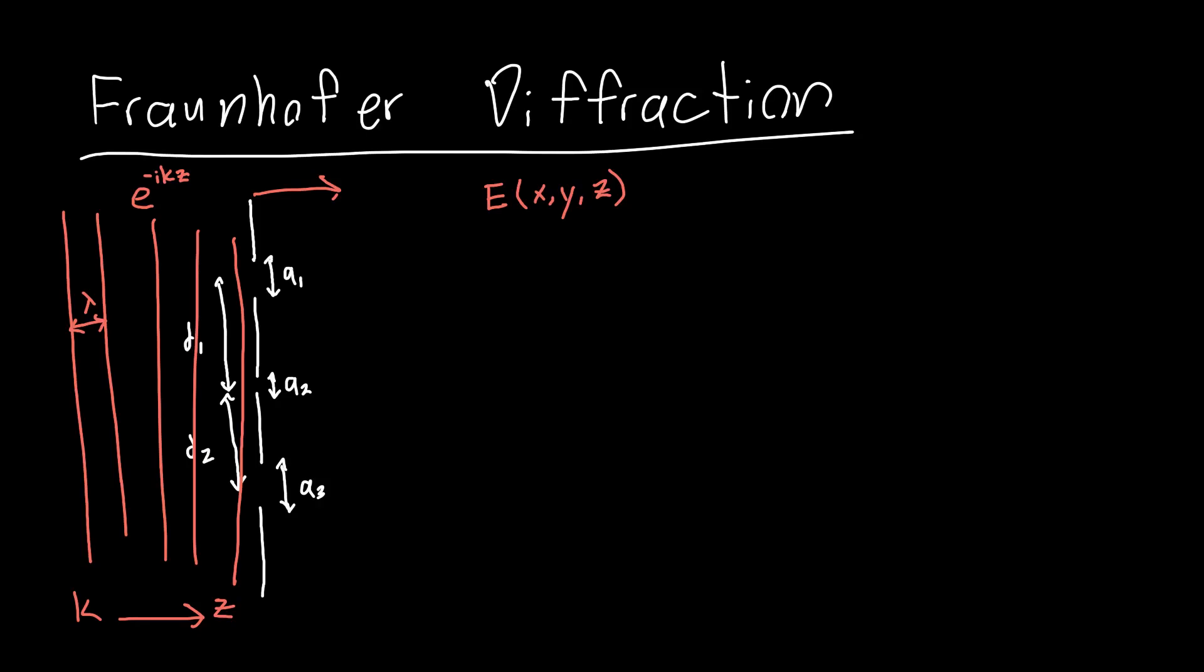So after our plane wave hits these slits, we sort of know that it's going to diffract outwards. It's going to diffract outwards from each of these slits. We can just use Huygens' principle to make that sort of qualitative statement.